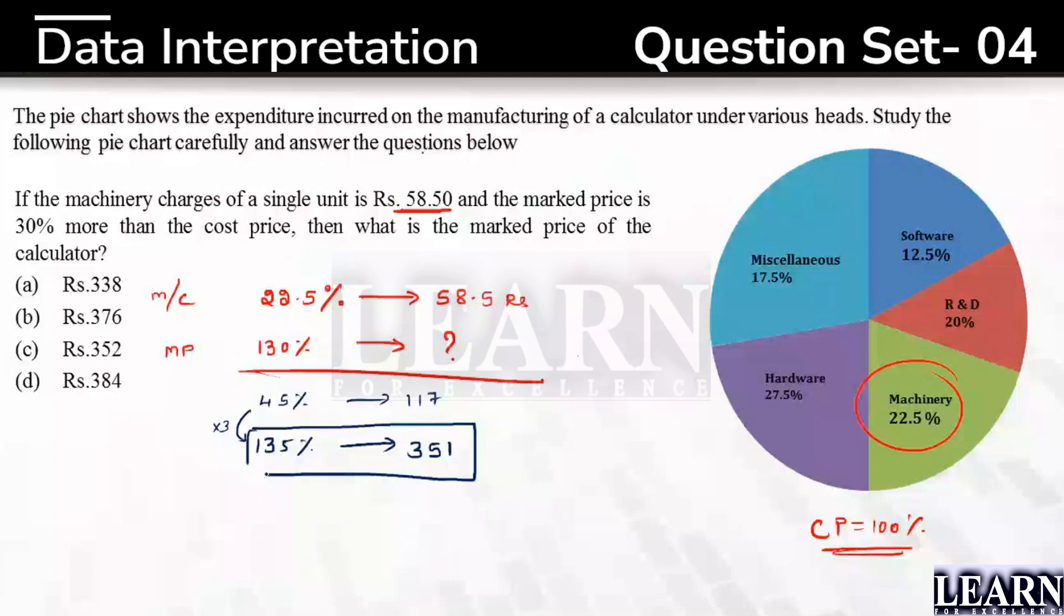Yes, we have got only one answer which is less than 351, that is 338. Yes, what if—few people might be having doubt, right? What if there's one more value, that is 340, and we have to go out with fine approximation?